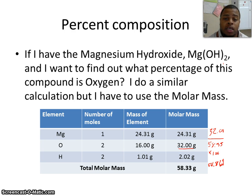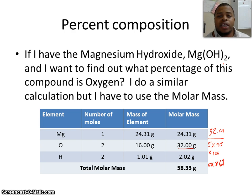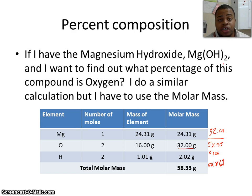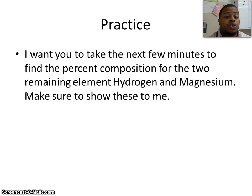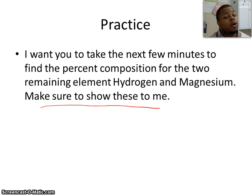This is all well and good when we have all the parts given to us. For practice, I want you to go ahead and figure out the mass percent for magnesium and for hydrogen. Using the same principles, make sure you have it, make sure you show them to me. After you've watched the video, go through and show them to me — make sure they're correct. I don't want you going on and practicing the wrong thing.